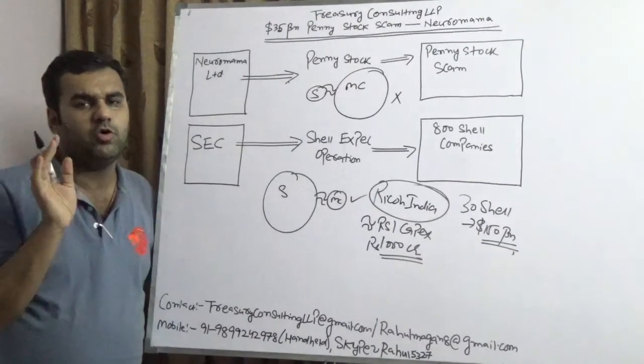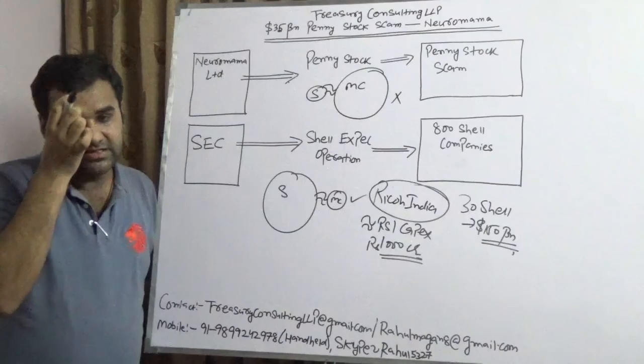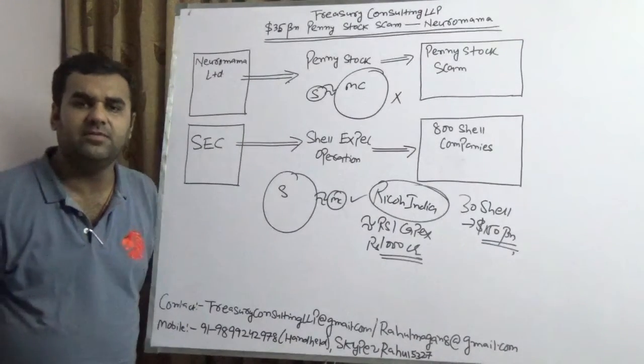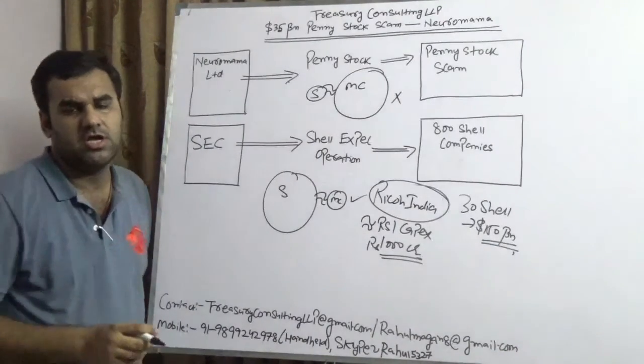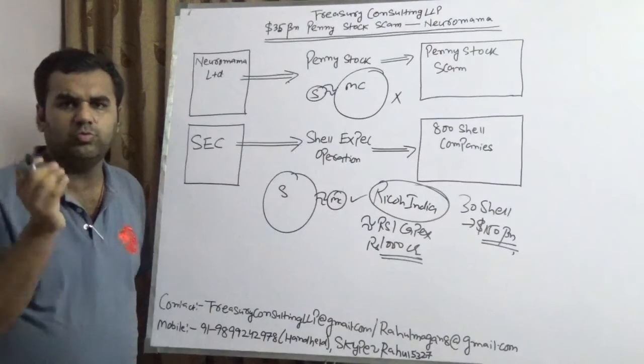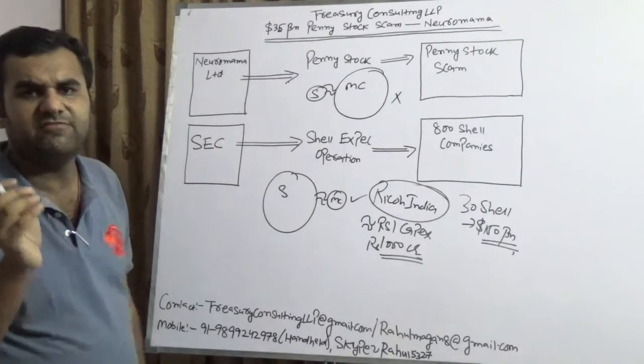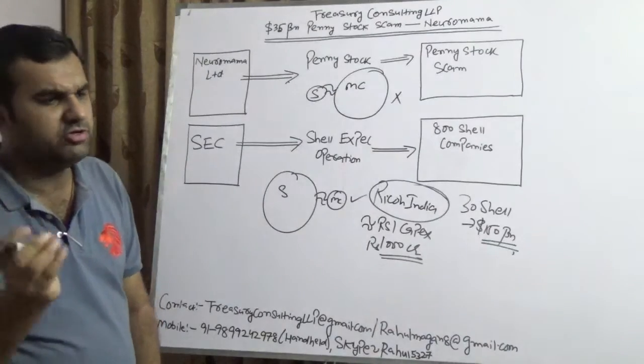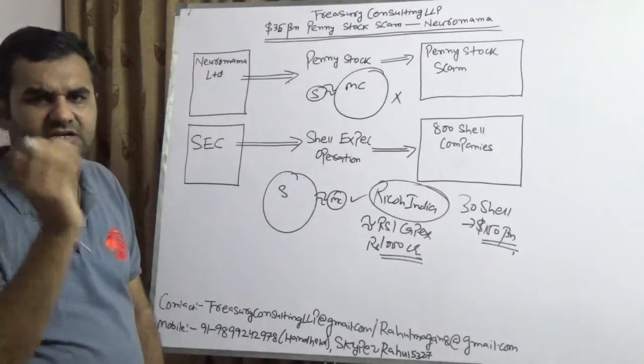And we also understand that if we go in the equity derivative market, then there is a lot of trading which is happening in penny stocks than in the regulated stock. Because the regulated stock would increase by 1 rupee, 2 rupee, 3 rupee. On the other hand, if you buy a penny stock in 5 rupee, it would increase to 10 rupee, which is exactly 100% of the margin.